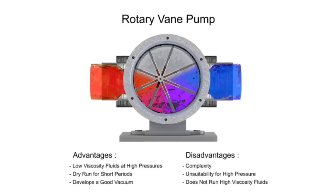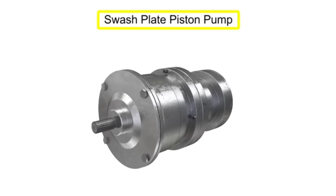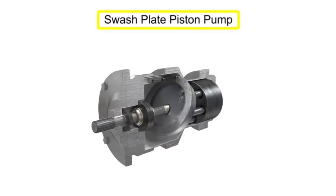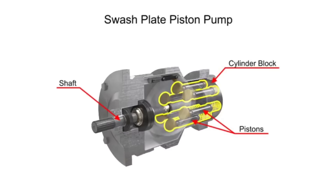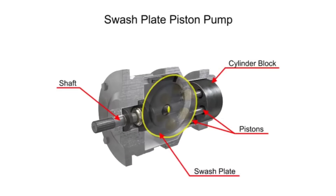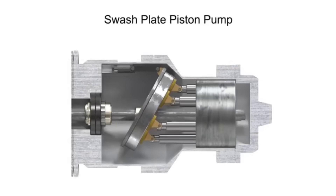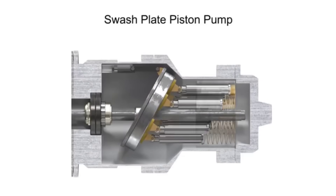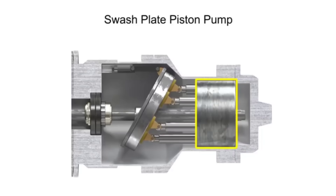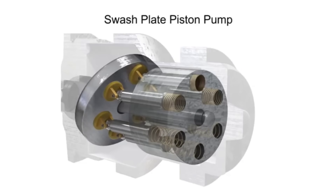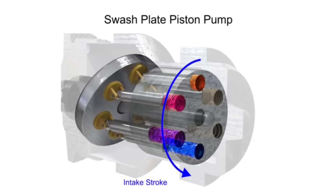Piston pumps come in many different forms. A swash plate is a device used to translate the motion of a rotating shaft into the reciprocating motion of a piston. Swash plate piston pumps have a rotating shaft connected to a cylinder block containing pistons, which are pressed against a stationary swash plate that sits at an angle to the cylinder. As the shaft rotates, the pistons move against the swash plate, causing them to reciprocate within the piston block. The pistons create a vacuum that forces fluid in during half a revolution and expels fluid during the other half.